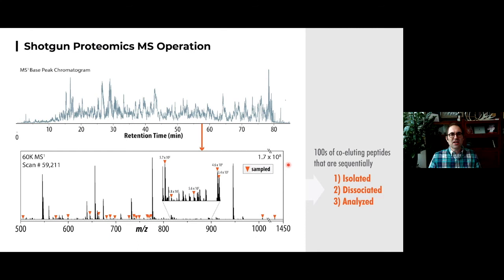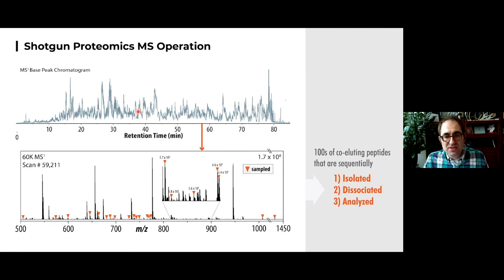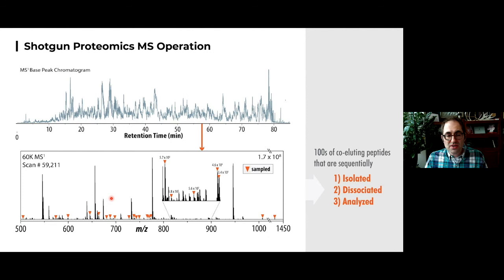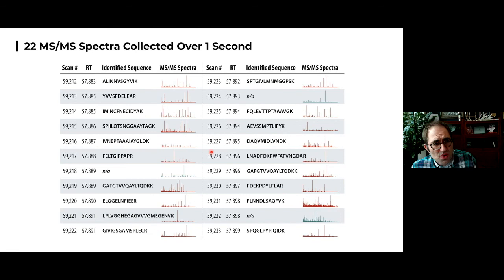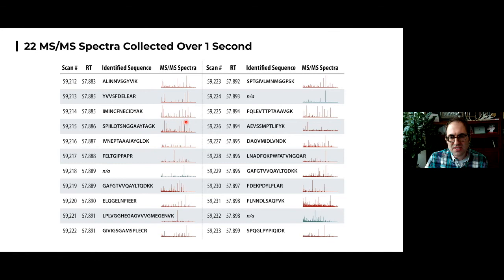In the context of a proteomics experiment: the LC chromatograph produces peaks of peptides eluting from the column. As they enter the mass spectrometer, it takes MS1 survey scans of all eluting peptides, then targets them one at a time for isolation, dissociation, and tandem mass spectral analysis. This process is very fast — 22 tandem mass spectra were collected in just over one second, about 20 per second. Over an hour and a half of analysis, we can collect tens or hundreds of thousands of tandem mass spectra.